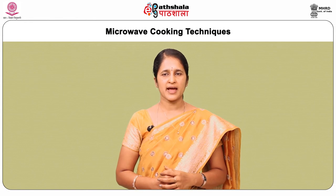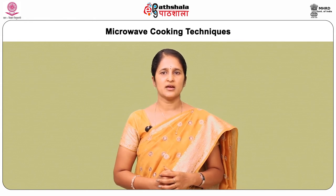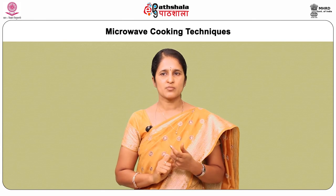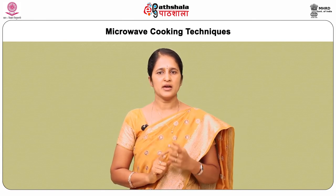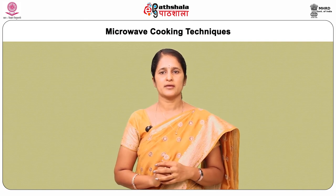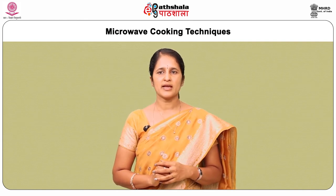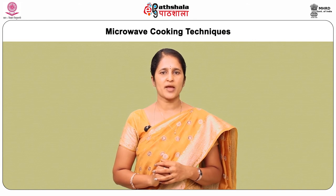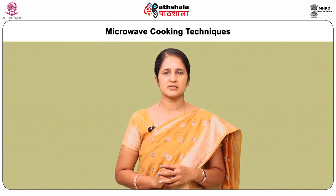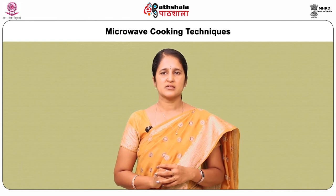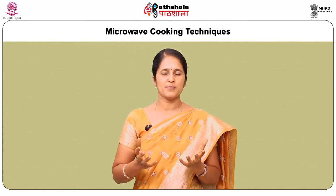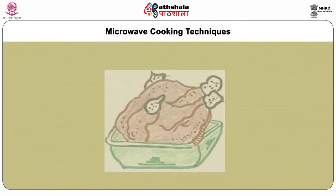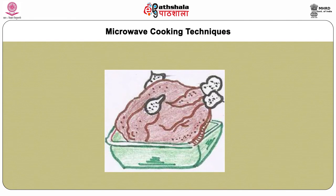Areas which attract the most energy, like the wings, breast bone of turkey or the square corners of a cake, need protection to prevent overcooking. Aluminium foil can be used to prevent the loss of microwave energy from these areas. Covering meats with a sauce also shields the meat and prevents drying out.